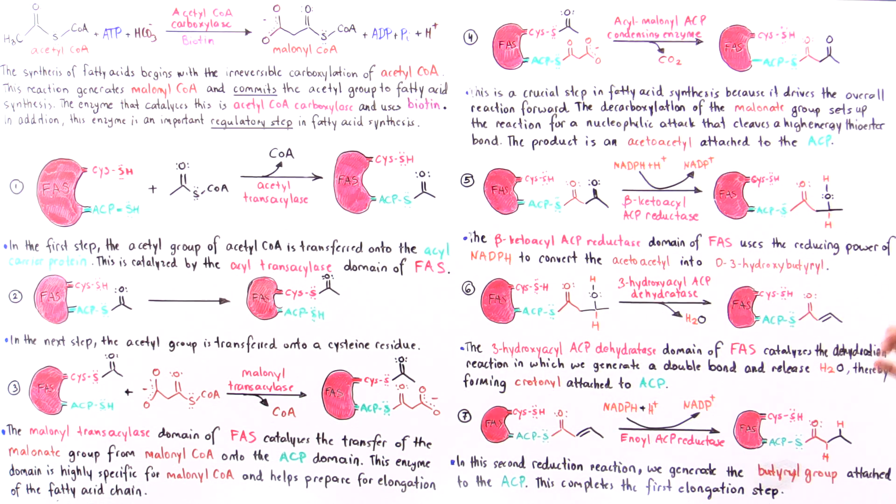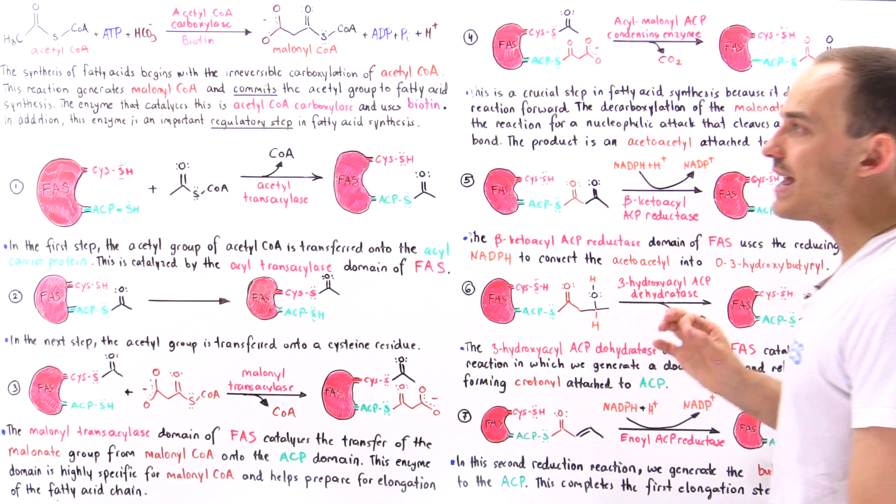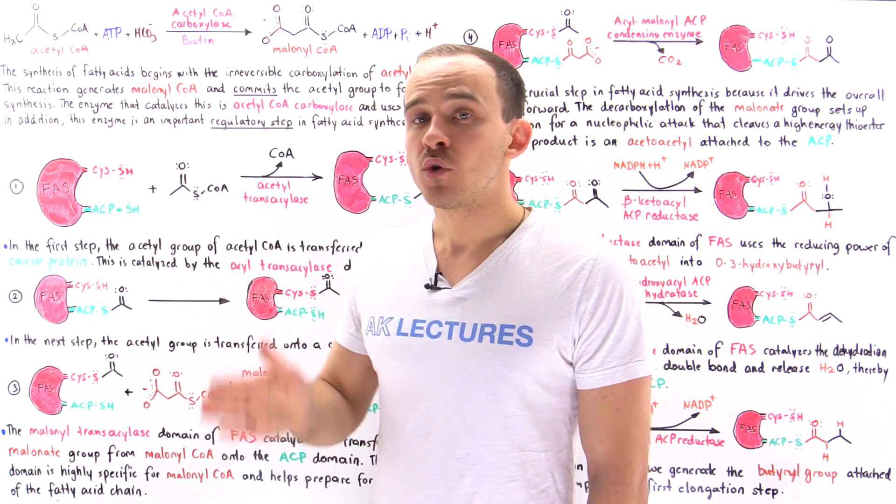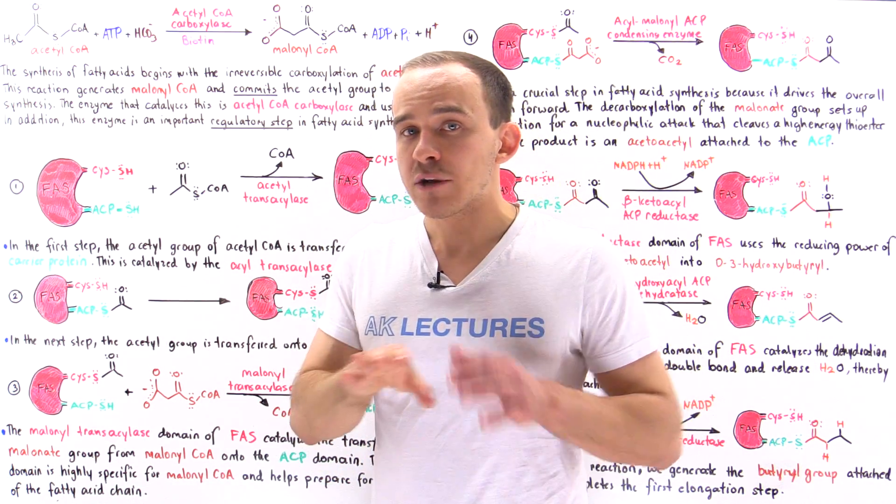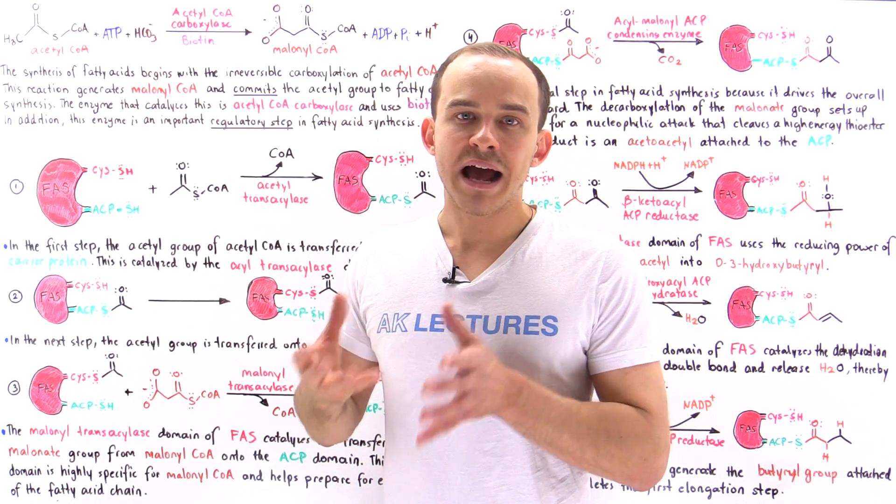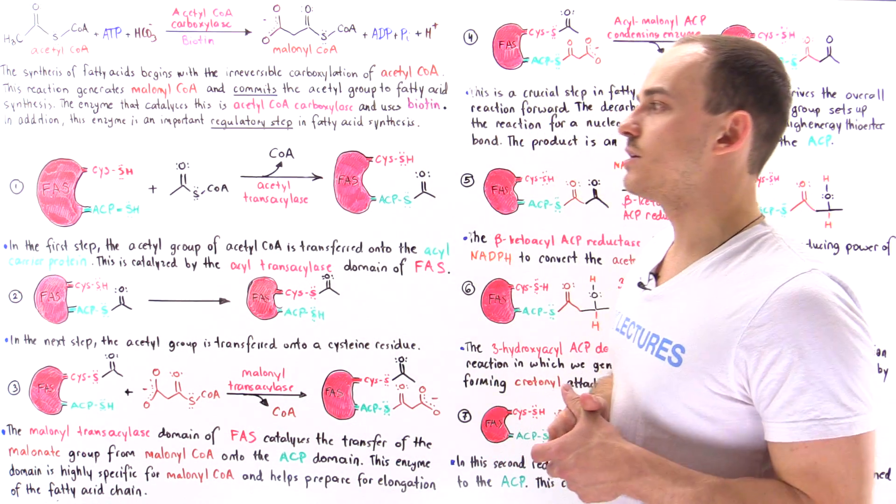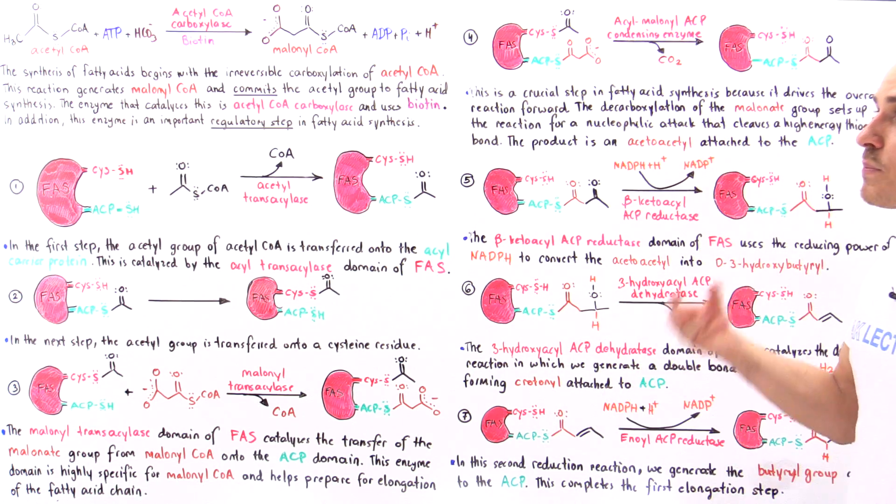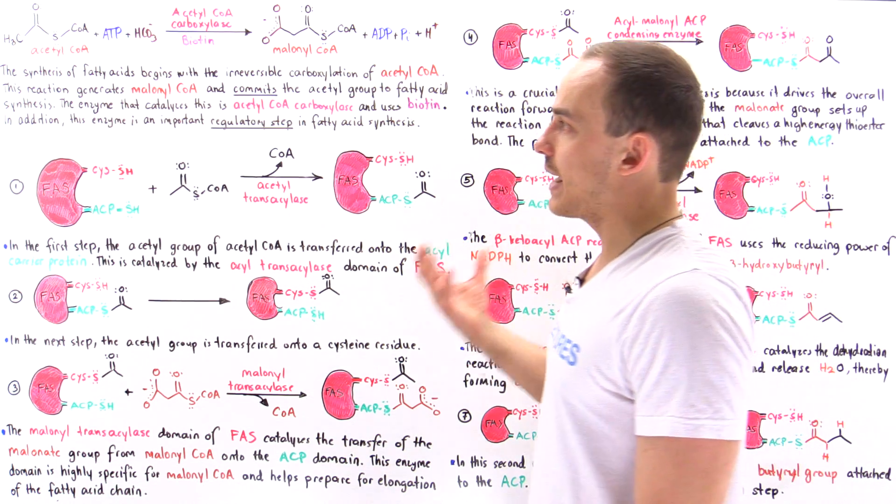And once we generate that palmitoyl intermediate molecule, an enzyme known as thioesterase will cleave that bond, that will release that 16-carbon palmitate fatty acid molecule, and that pretty much completes that fatty acid elongation step.